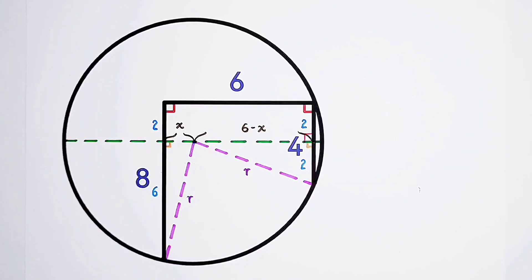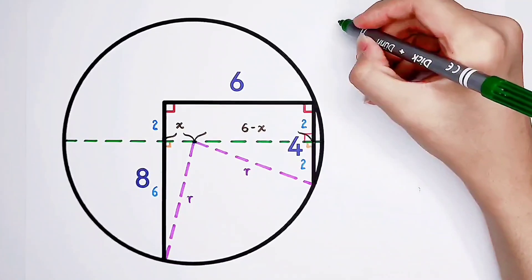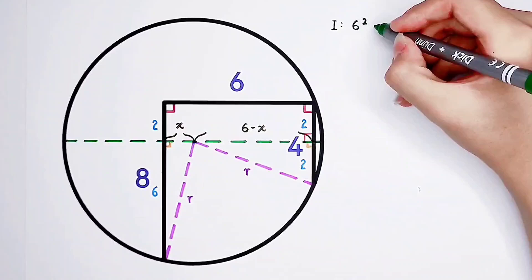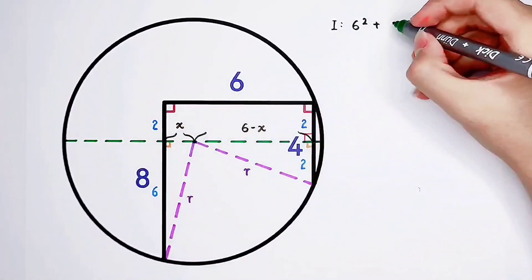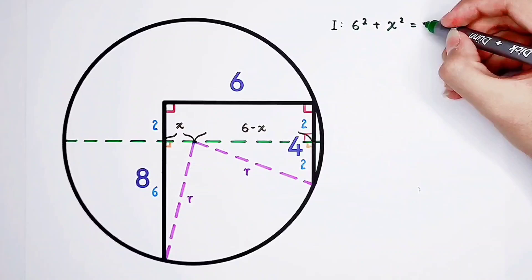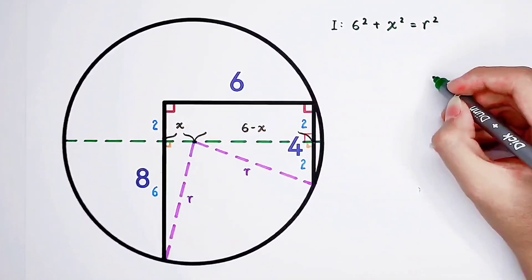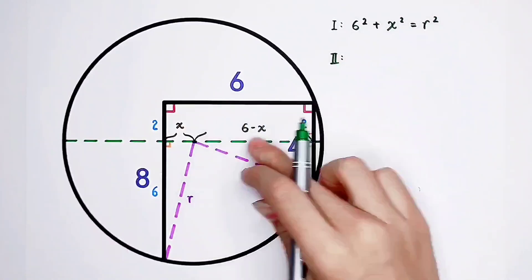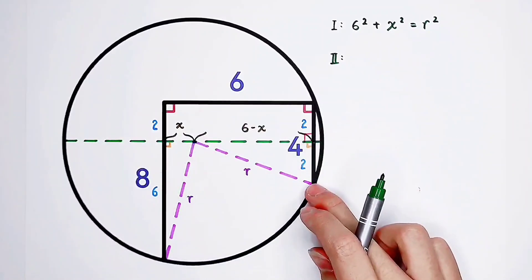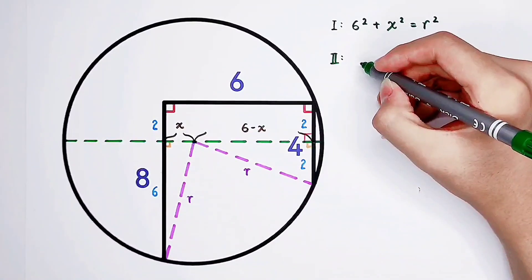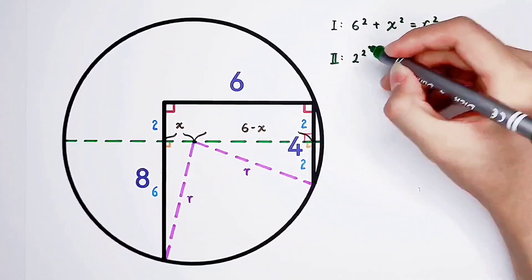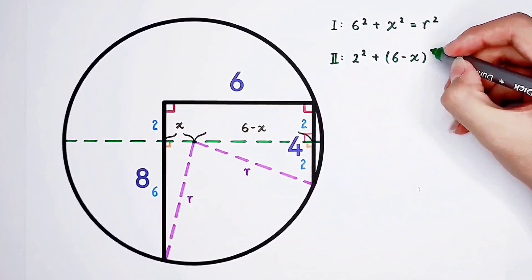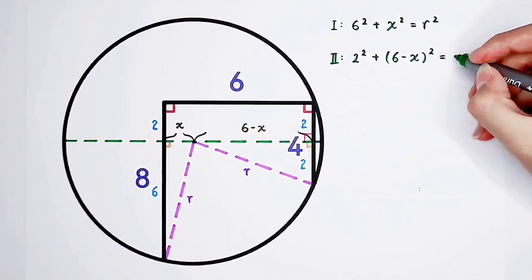In our this triangle, according to the Pythagorean theorem, what can we get? In our first triangle, we can get 6 squared plus x squared equals r squared. Easy. And in our second right triangle, we can get a little bit complicated, but not so. 2 squared plus 6 minus x squared equals r squared.